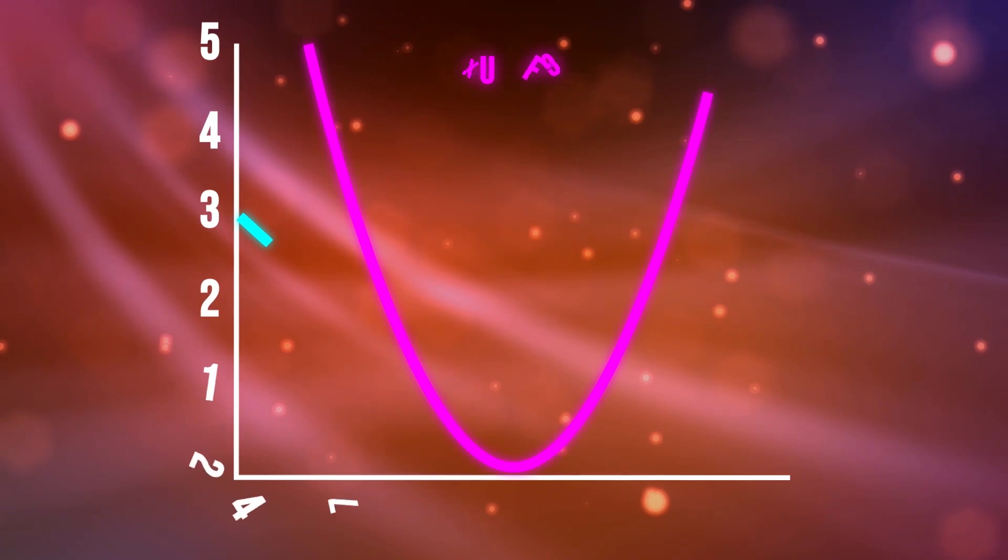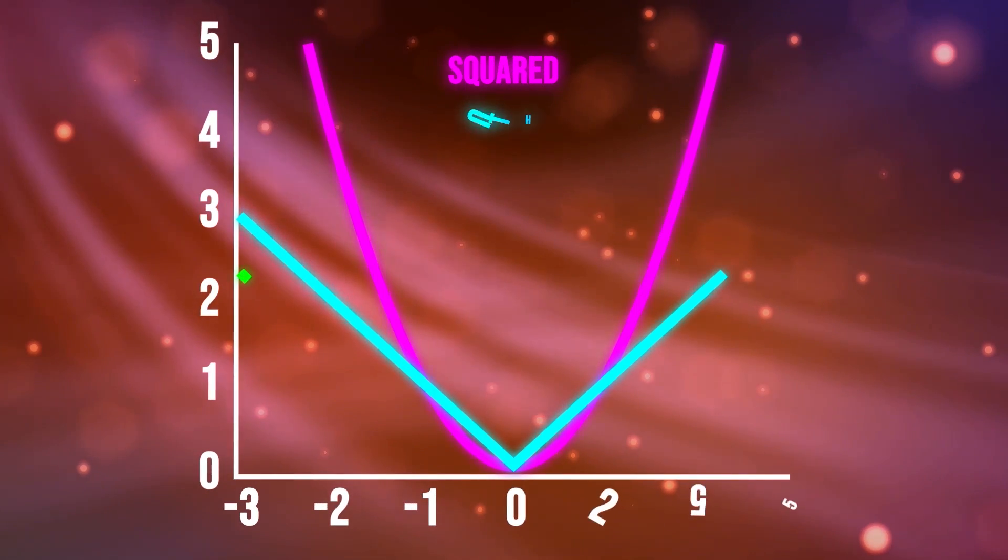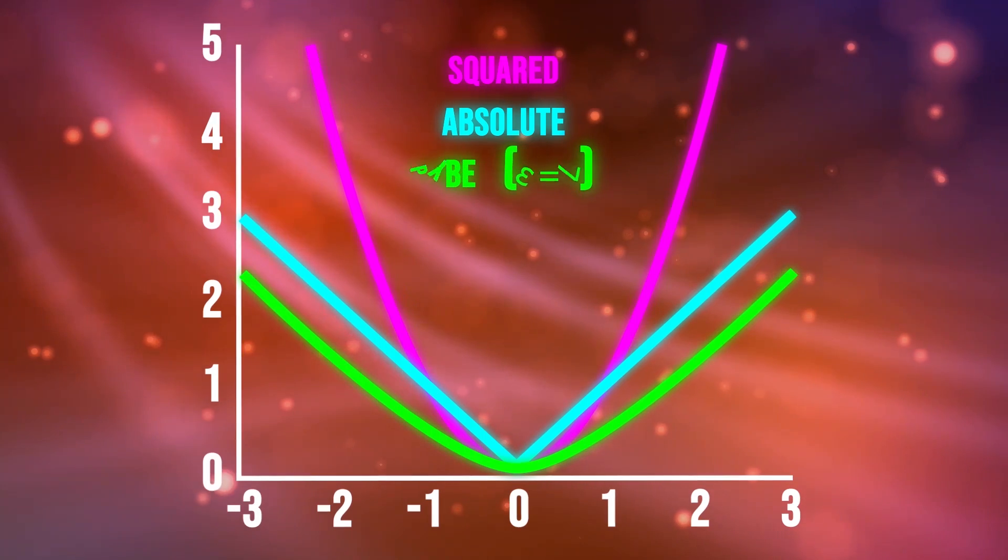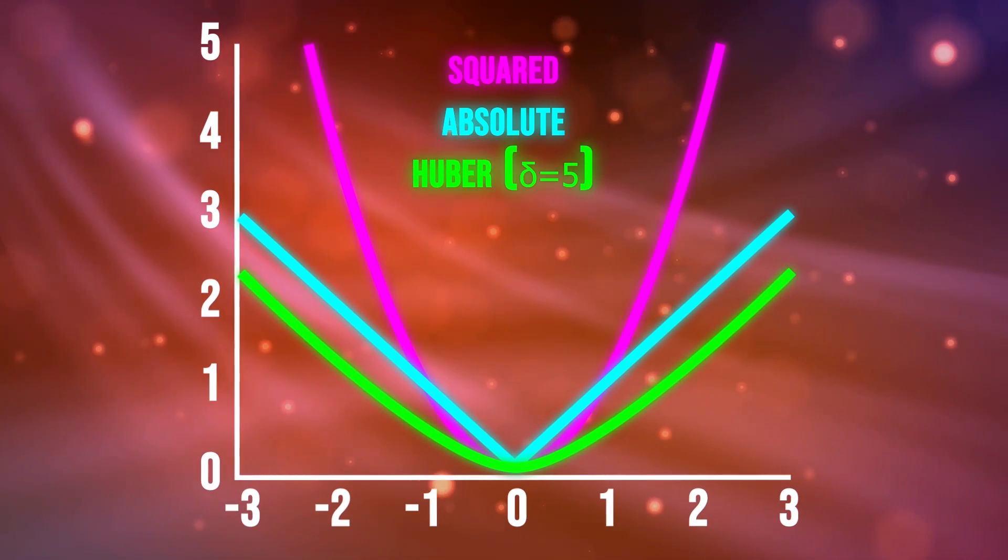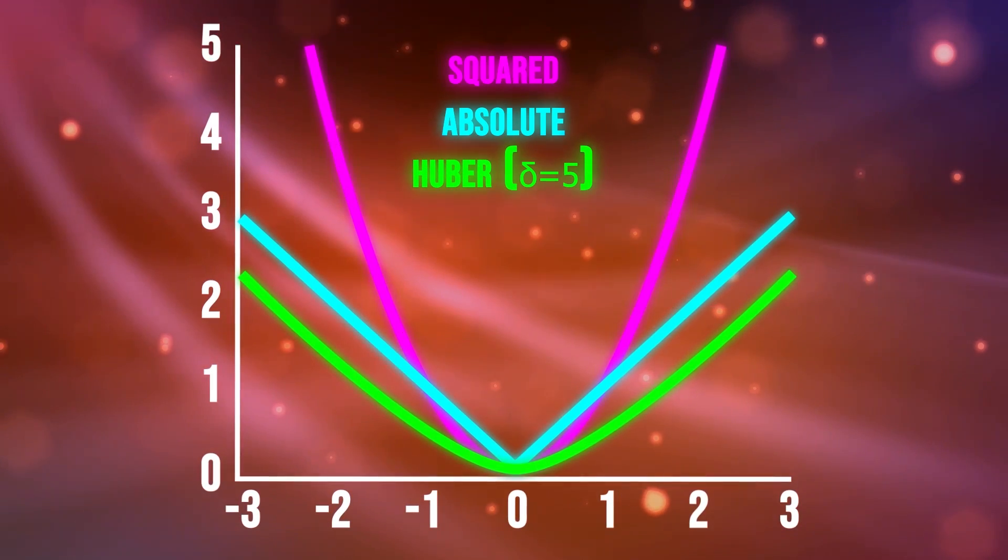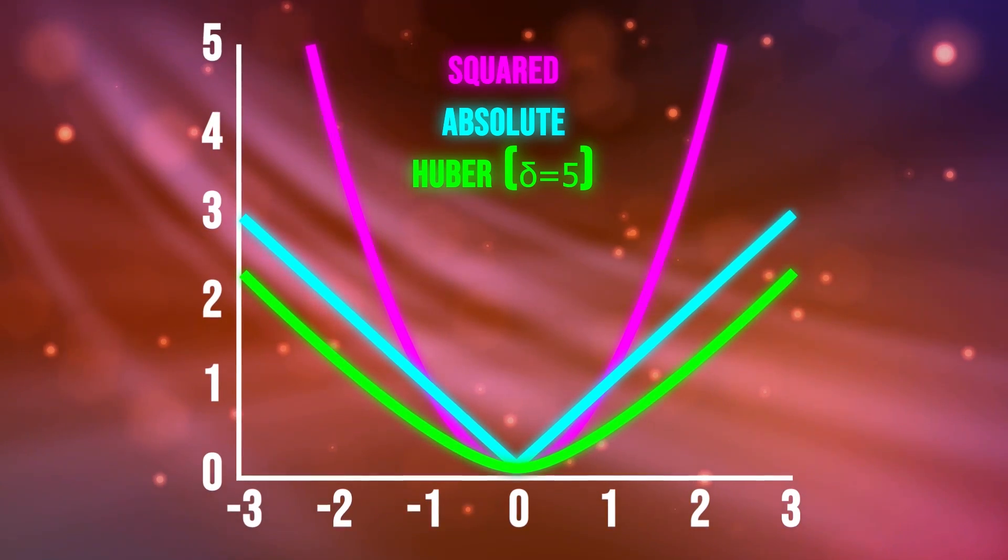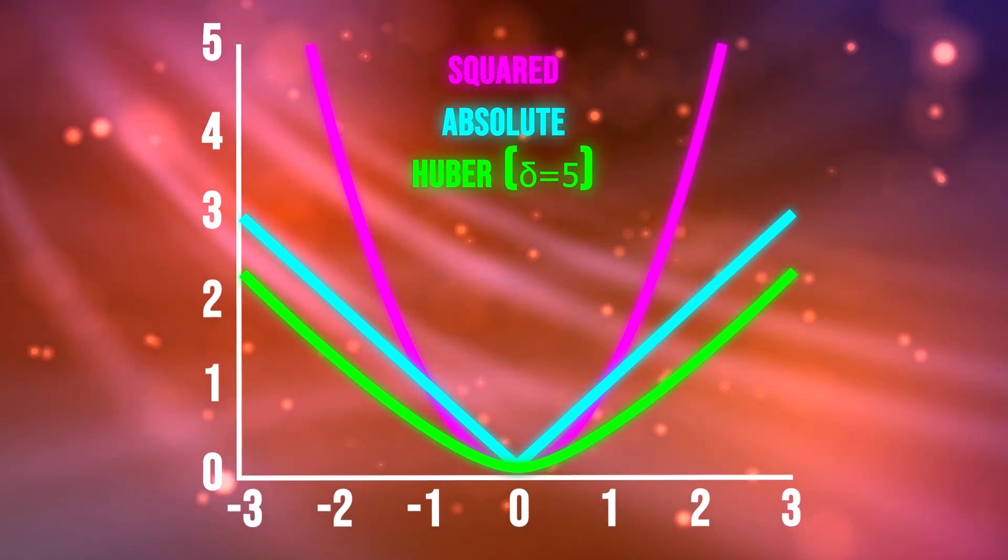Lastly, a loss very similar to MAE is called the Huber loss. It's also less sensitive to outliers than the mean squared error. It's quadratic for small values and linear for large values. If we graph out all three of these regression loss functions, it will look something like this.